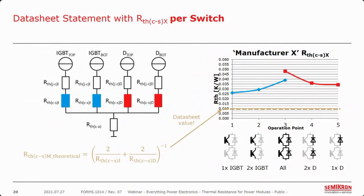A workaround that a few module manufacturers try is to derive a per-module case-to-sink value from those per-switch values given on the data sheet, using a mathematical formula. However, if we compare that calculated per-module thermal resistance to the actual effective per-module thermal resistance measured earlier, we find that this theoretical value calculated mathematically from the per-switch values is actually lower than the lowest possible case-to-sink thermal resistance we measured with the coupled case — that calculated bronze value is lower than even the trough of the green line from actual measurements.